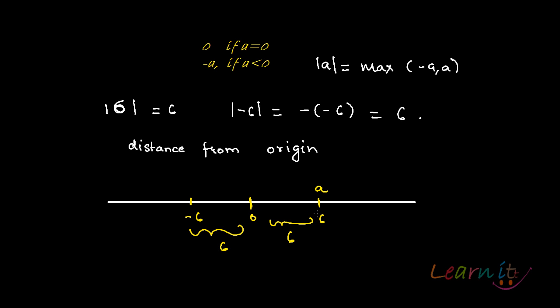So, mod A, or the absolute value of A, is essentially the distance between A and 0. Since distance is always positive, the absolute value will always be positive. This is a very important concept, and we will be looking at a lot of properties in the coming videos.